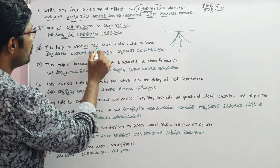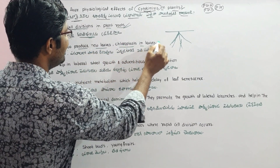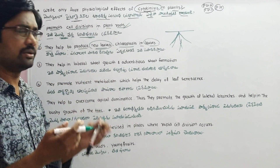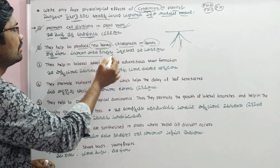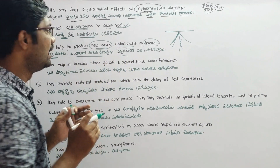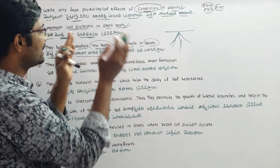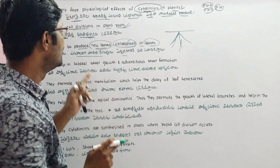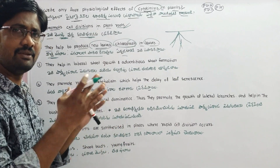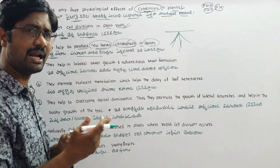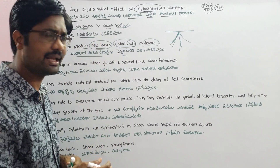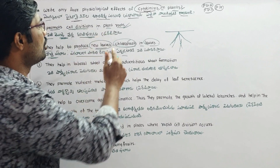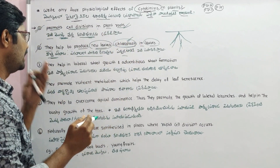The second physiological effect is that cytokinins help to produce new leaves and chloroplasts in those leaves. They attract new leaves and are involved in producing chloroplasts within the developing leaf tissue of the plant.